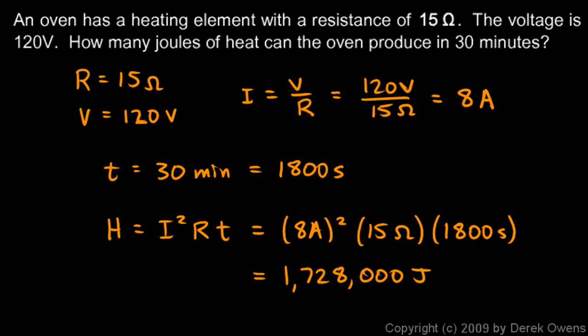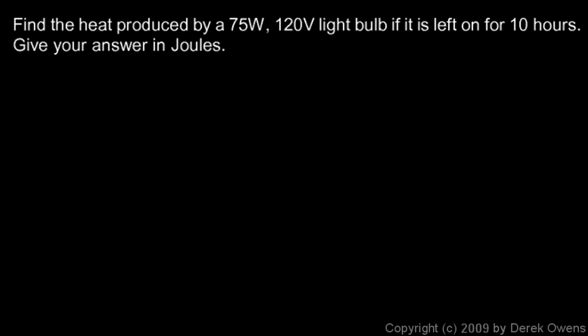In this example, we're told to find the heat produced by a 75 watt, 120 volt light bulb if it is left on for 10 hours. So basically a typical lamp that you might have in your living room - 75 watts plugged into a 120 volt electrical outlet, and you leave it on overnight. How much heat is produced? Give your answer in joules. We were given the power, we're given the voltage, we're given the time.